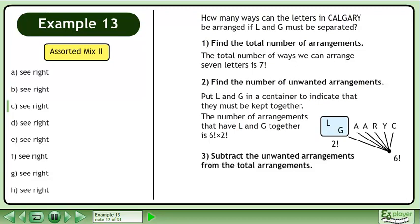Finally, subtract the unwanted arrangements from the total arrangements. This gives us 7 factorial minus 6 factorial times 2 factorial. Don't forget to divide out the repetitions. The answer is 1,800.